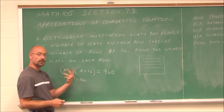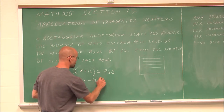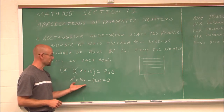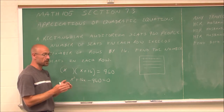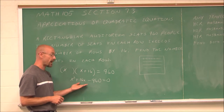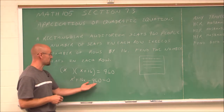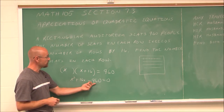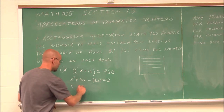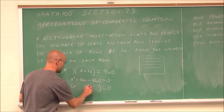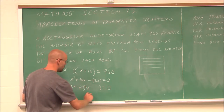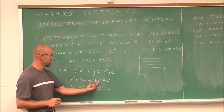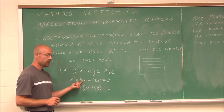Because I notice it is a quadratic, I'm going to set it equal to 0 by subtracting 960. So to find the number of rows, because that was my variable, I have a quadratic equation. Because I know that there is a whole number of seats, I'm going to assume that this is factorable. And it is factorable.